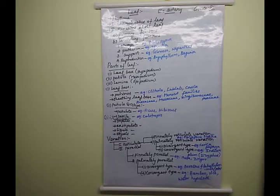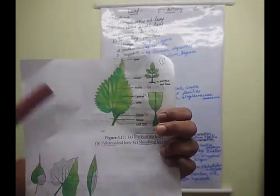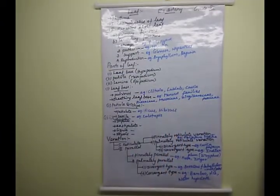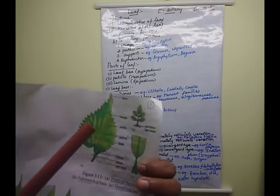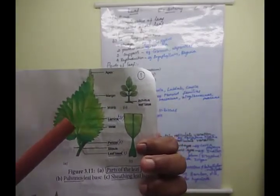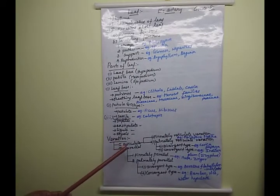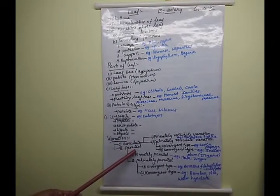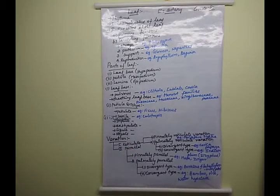The next part is venation. What is venation? Venation means the arrangement of veins and veinlets on the leaf lamina region. The arrangement of veins and veinlets on the leaf blade or lamina is called venation. Venation comes in two types: reticulate venation and parallel venation.